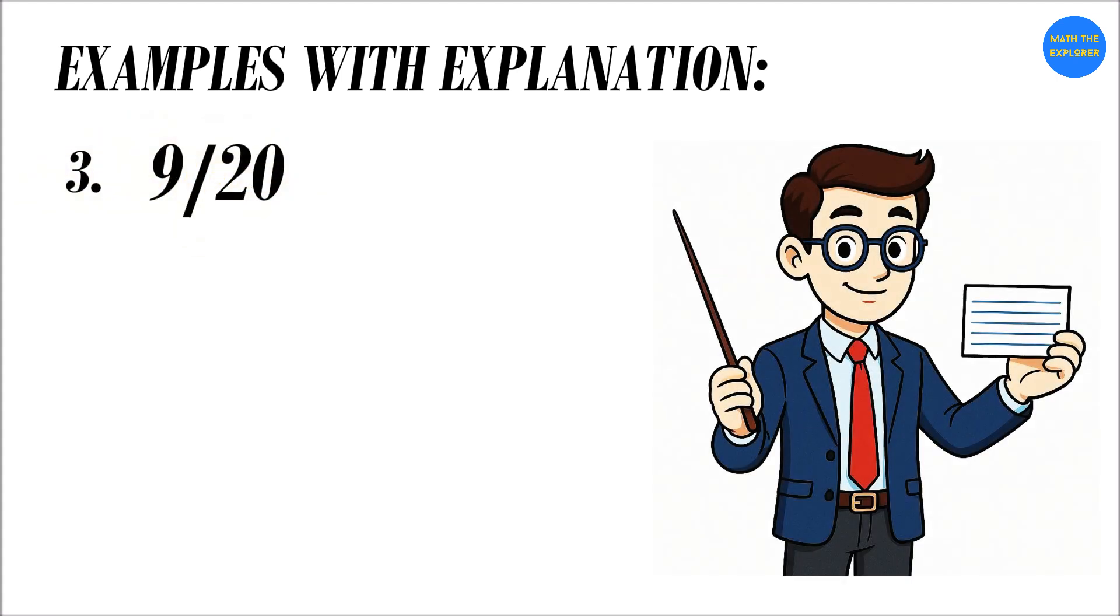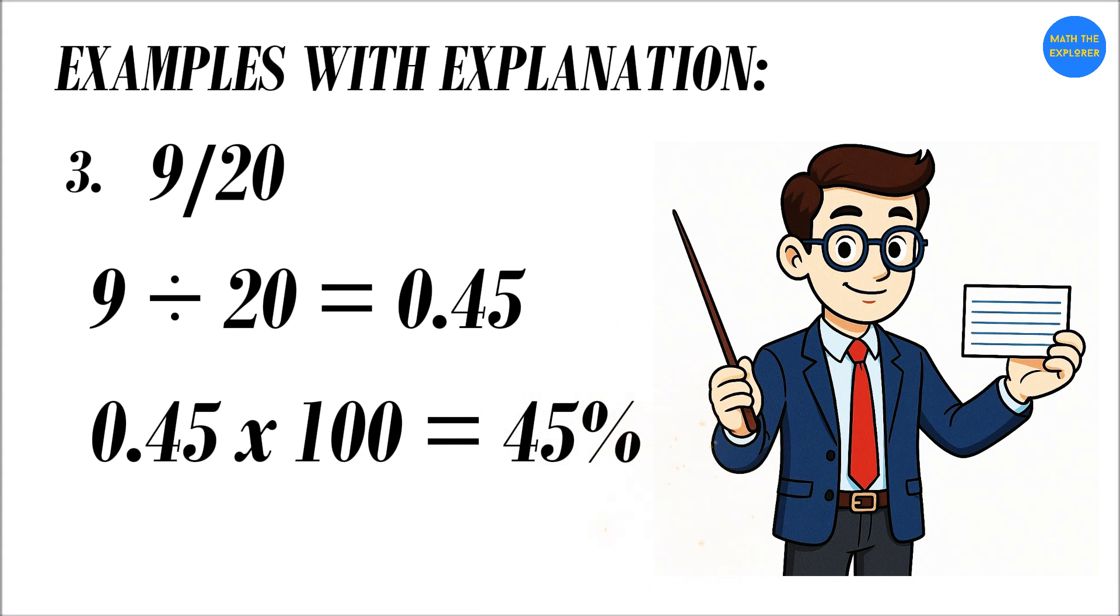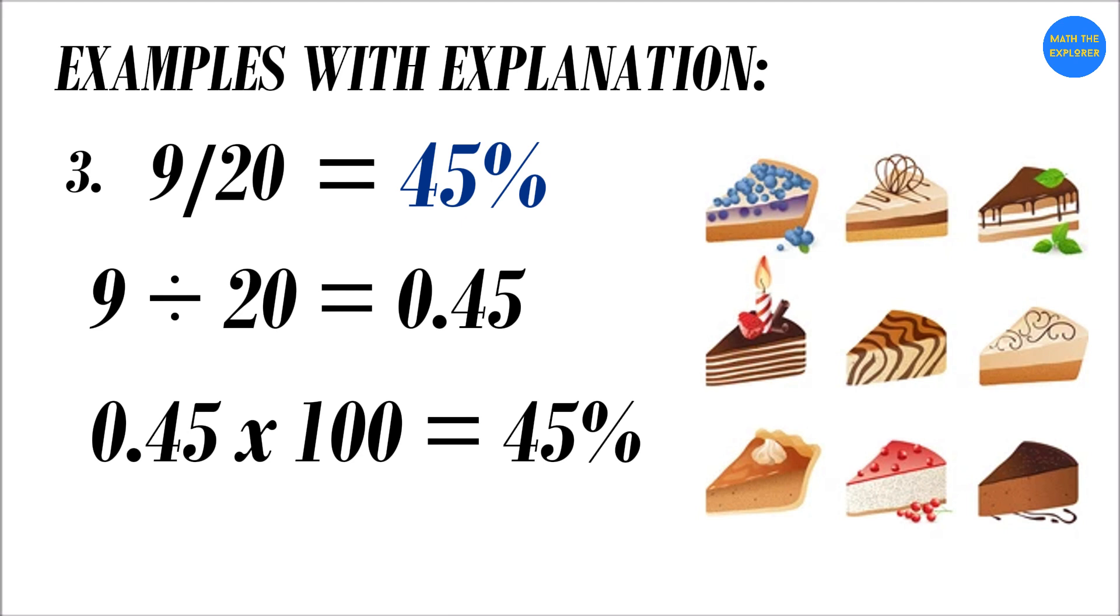Nine divided by 20. Nine divided by 20 equals 0.45. Again, multiply by 100. 0.45 times 100 equals 45 percent. So, nine-twentieths equals 45 percent. Imagine you ate nine slices out of a 20-slice cake. That's 45 percent of the cake.